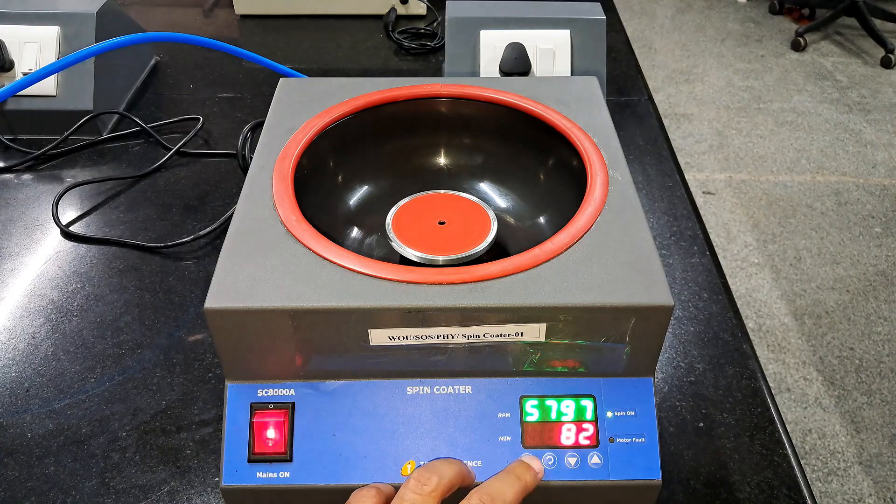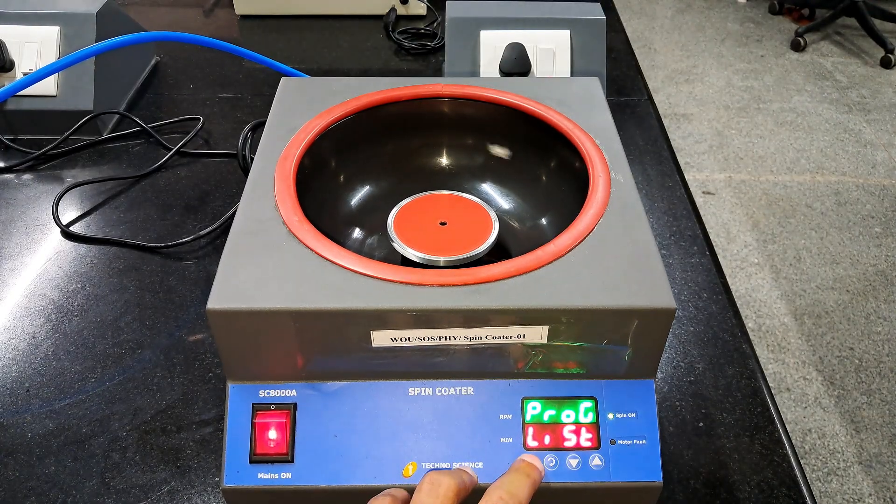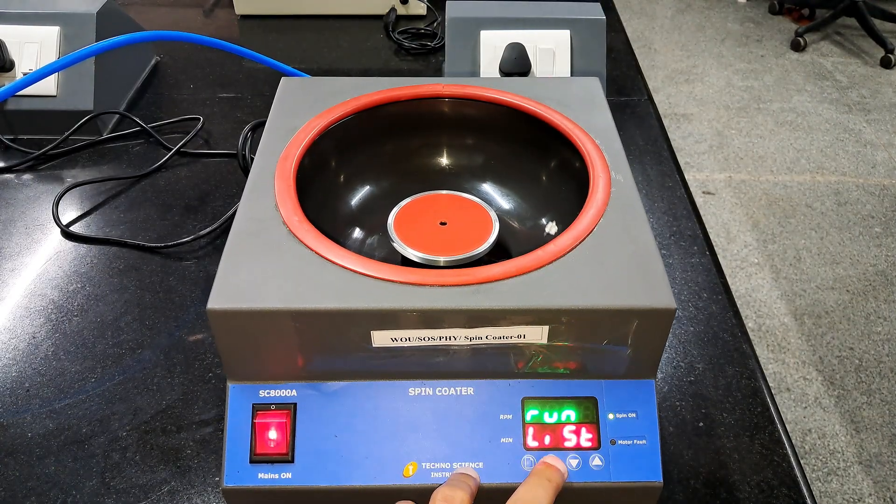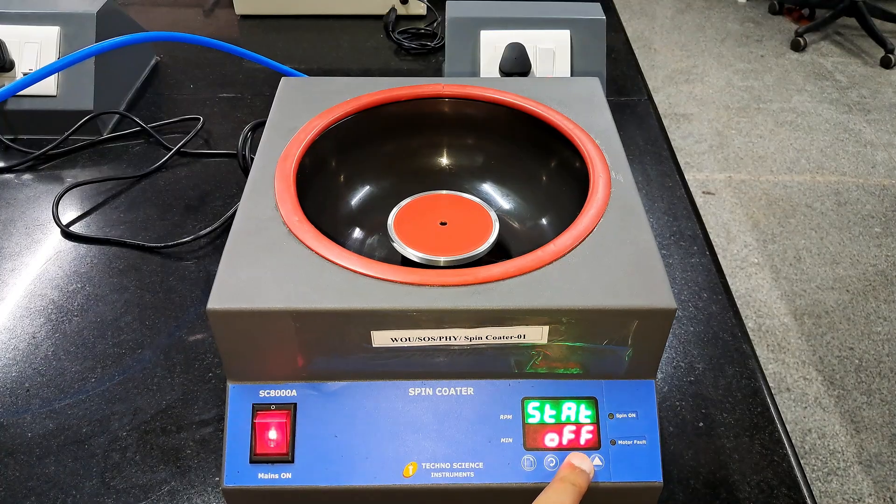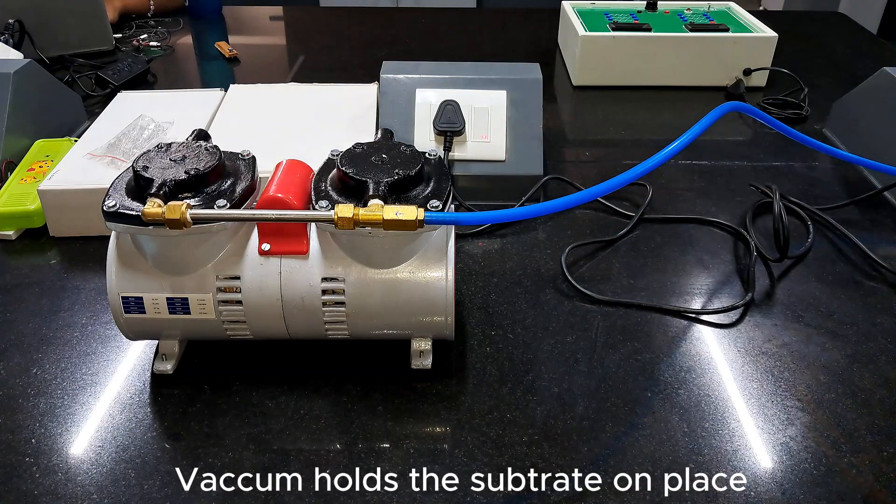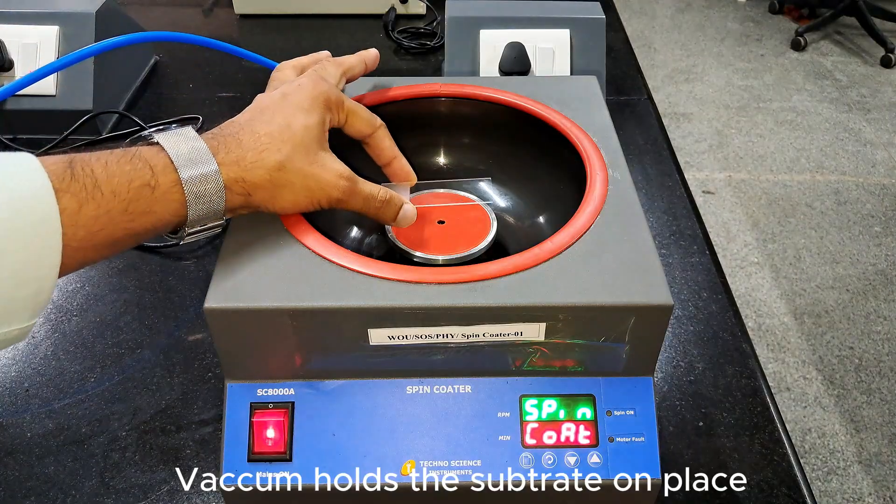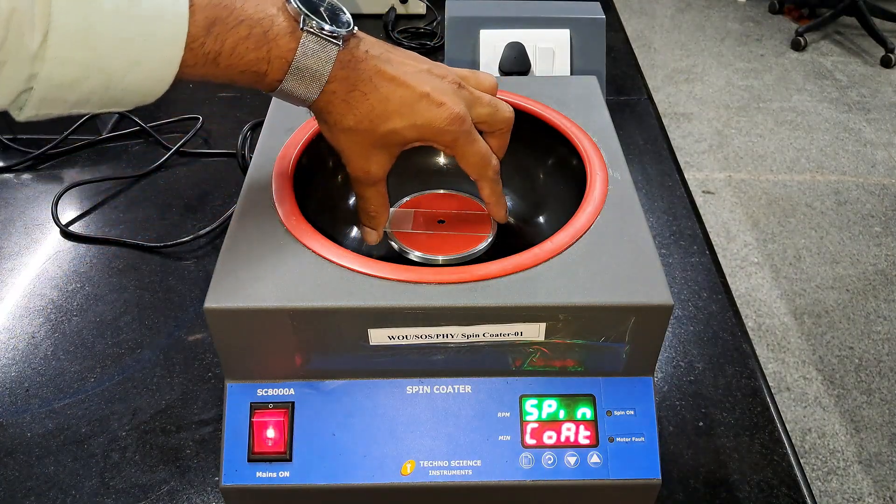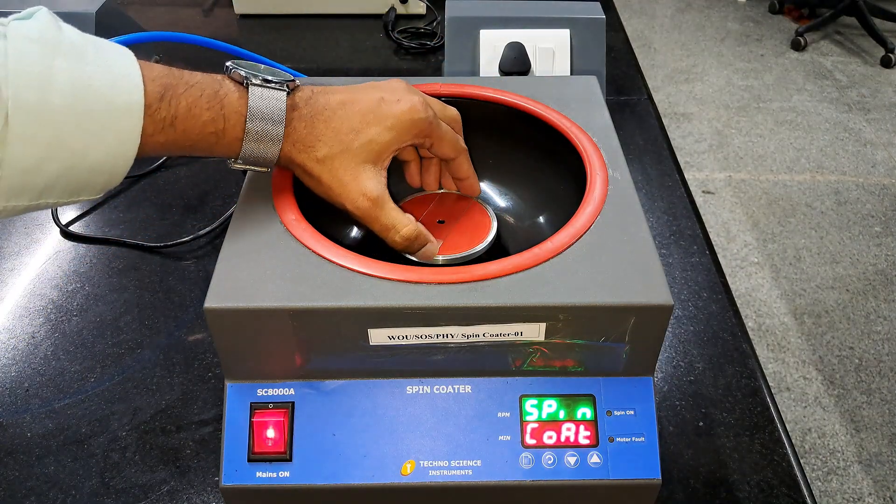We can stop the program in between by pressing run list start run start off. The purpose of vacuum is to hold our substrate. It has a rubber pad to provide the strong grip.